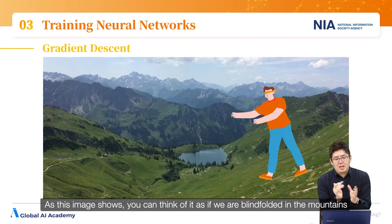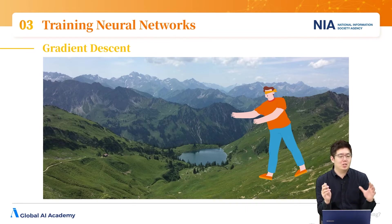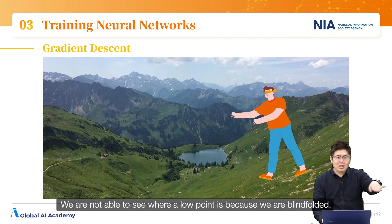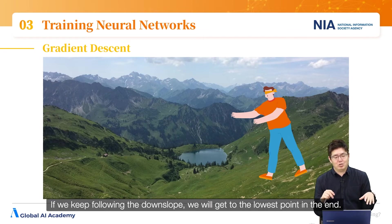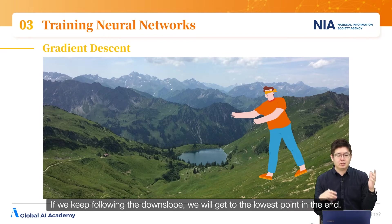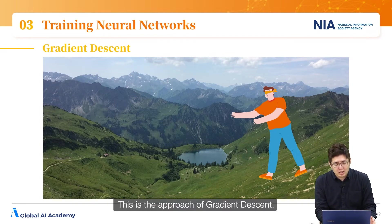As this image shows, you can think of gradient descent as being blindfolded in the mountains and heading to a low point. We are not able to see where the low point is because we are blindfolded. All we have is the sense on our soles — we can feel the slopes. If we keep following the downward slope, we will get to the lowest point in the end. This is the approach of gradient descent.